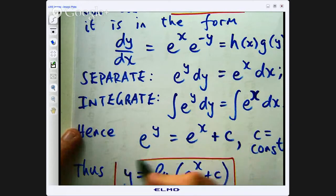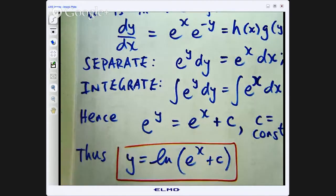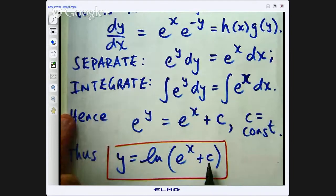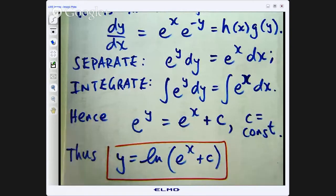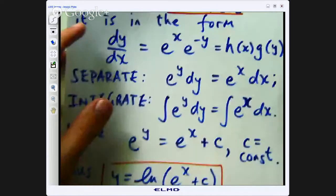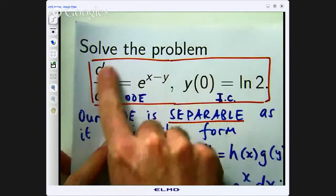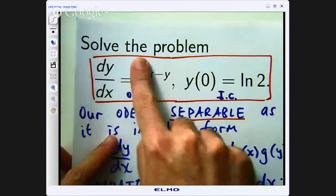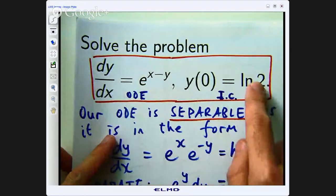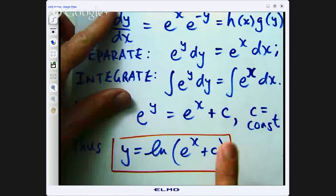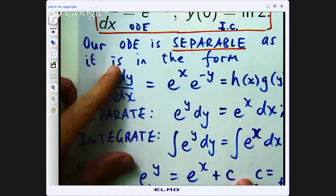Now, we are not quite done yet because what about this c? c could be anything here. And the other thing that we have not done is we have not used this bit of information yet. We have only worked with the differential equation. So what does this do? Well, this enables us to go through and pin down, in most cases, a precise value of c here. So what we are going to do, we are going to take this, plug it into there.